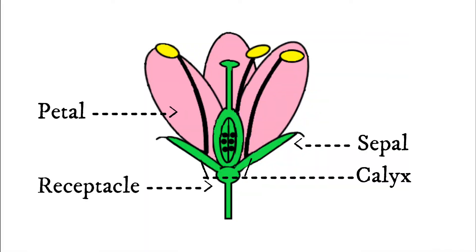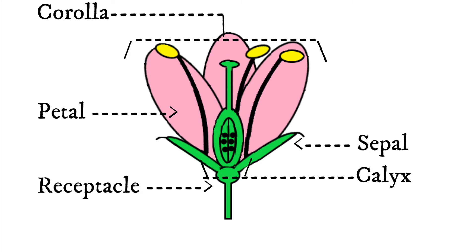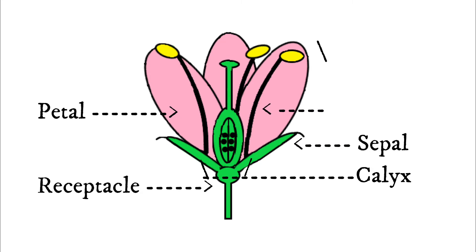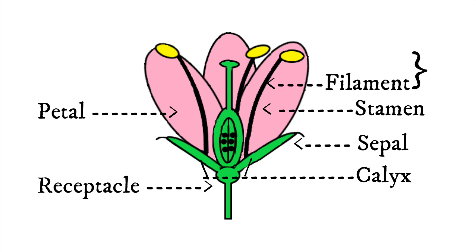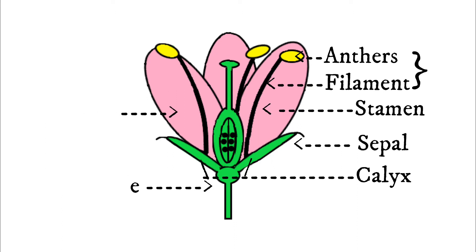Now, going back to the diagram, all of the petals together are called the corolla. Next, this part is the stamen, which is the male part of the flower. A stamen has two main parts, which are the filament and the anthers. And the anthers produce and hold the pollen grains, and the pistil is the female part of the flower.